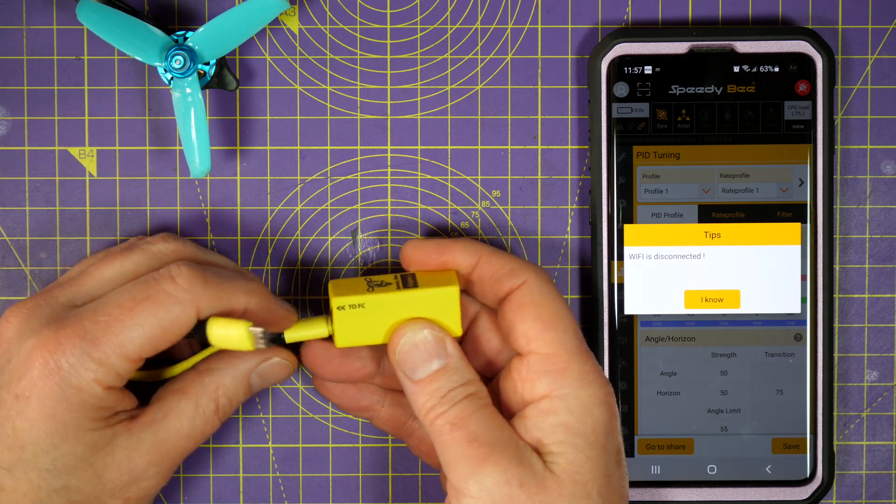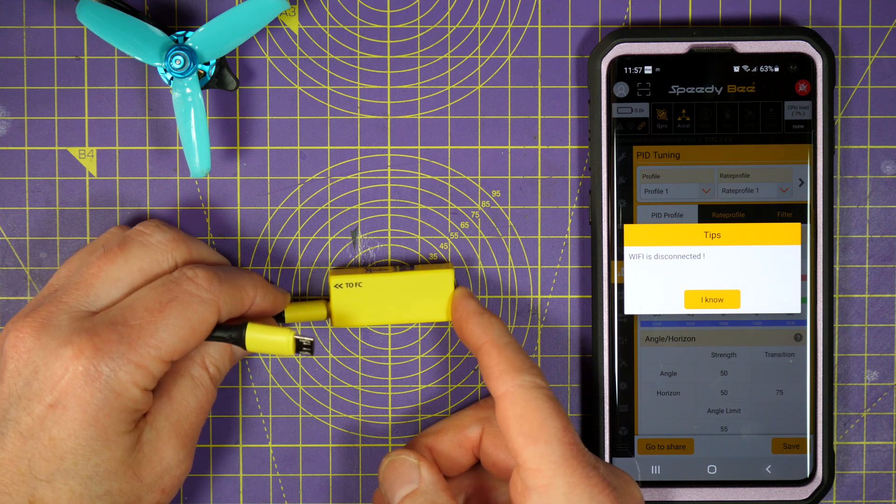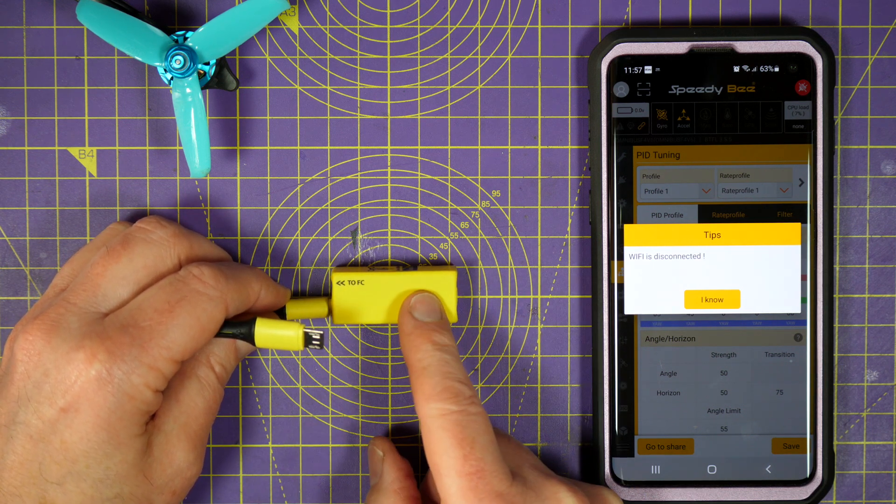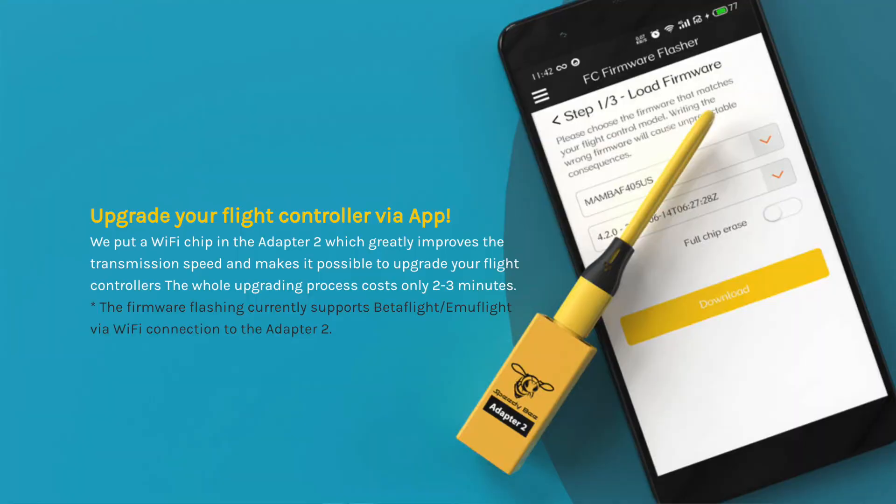The app and the adapter supports Betaflight iNav and EmuFlight configurators, which is great. But, at the moment, flight controller firmware flashing is only supported for Betaflight and EmuFlight. I think that's probably a limitation of the app more than anything else.